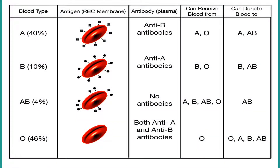The most common blood type is O, followed closely by type A. If you have type O blood, you can only get type O red blood cell transfusions, but you can give your red blood cells to people with type A, B, AB, or O blood, which is why you are sometimes called a universal donor. And if you are type AB, you are called a universal recipient, since you can receive all types of blood.